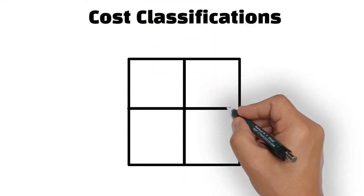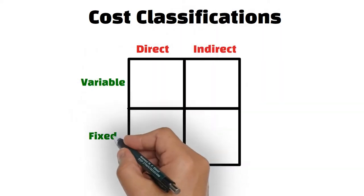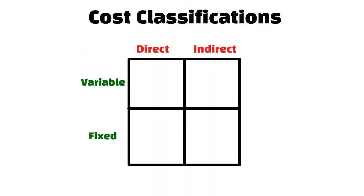In the previous video, we saw the direct-indirect and variable-fixed cost classifications. So we can say that costs can be direct-variable, direct-fixed, indirect-variable, and indirect-fixed.